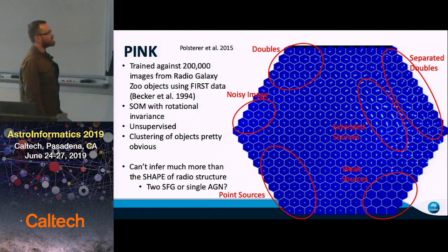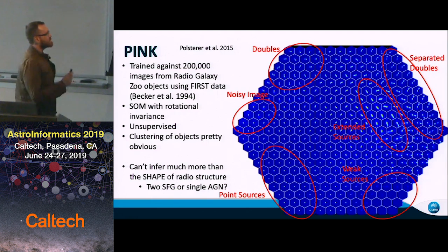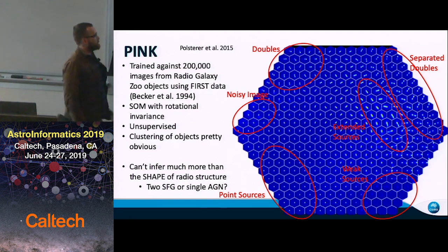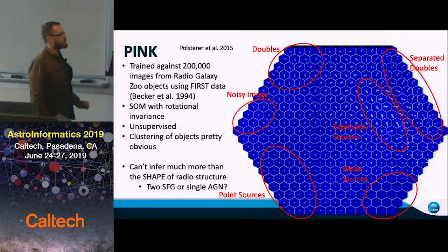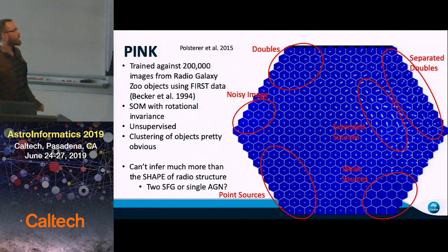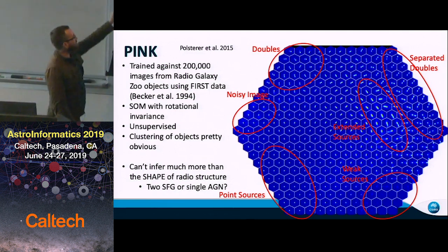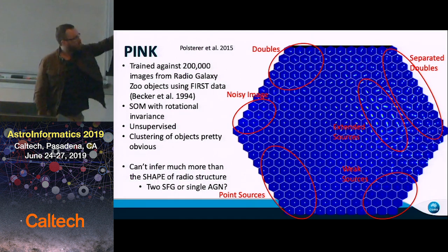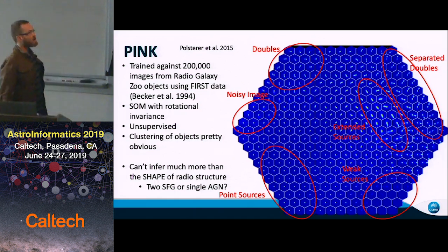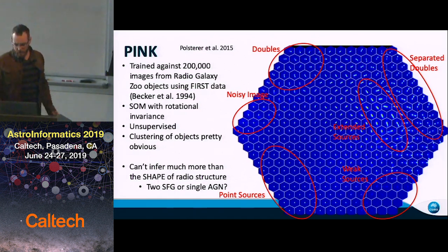As an example, here is a SOM trained against 200,000 images of objects selected to be in Radio Galaxy Zoo — these are radio images. You can see there is a very clear change in morphologies across the surface of the SOM. The key idea is: if you take any random image from those 200,000 training images, there is a neuron somewhere on this map that represents it. And importantly, these have been learned in a completely unsupervised way, without any prior knowledge about anything within those 200,000 objects.